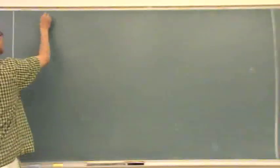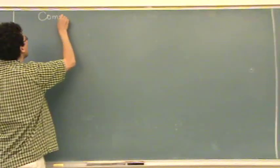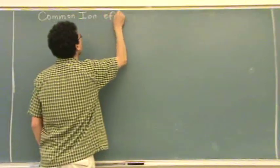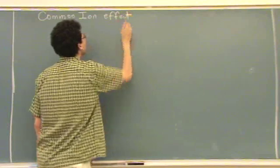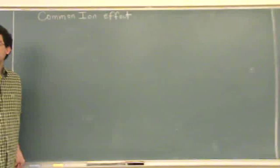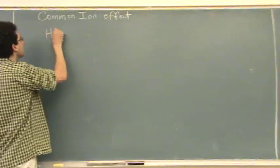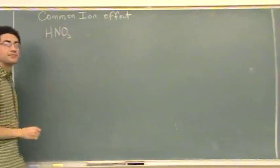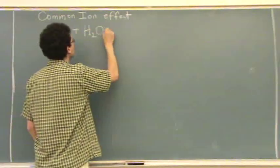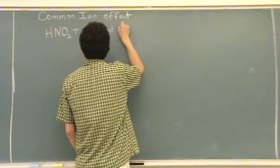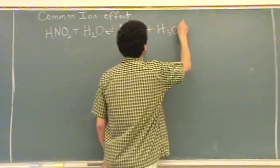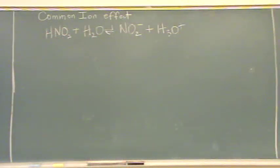The concept is that you have two equations, and then one of them donates an ion that's also present in another one. Okay, so the common ion effect. Let's just pick some random weak acid, say HNO2. So you'll have an acid, you can write out the acid equation, there's your acid equation.